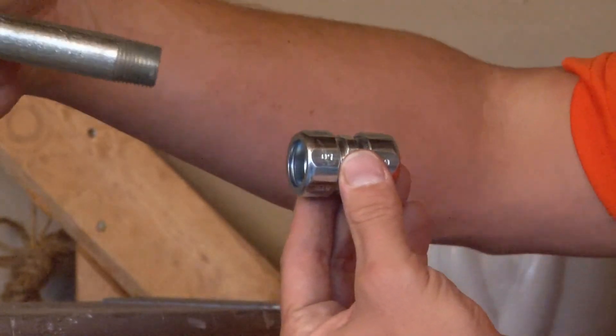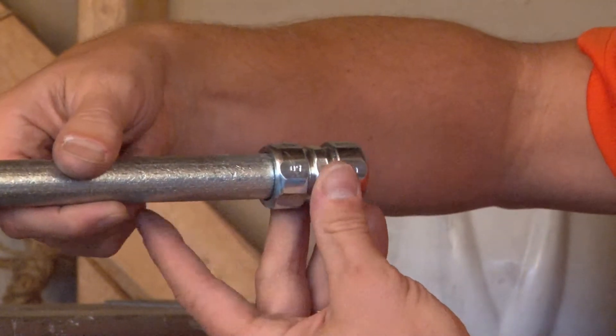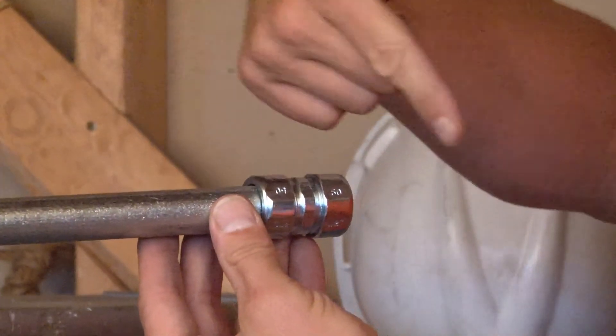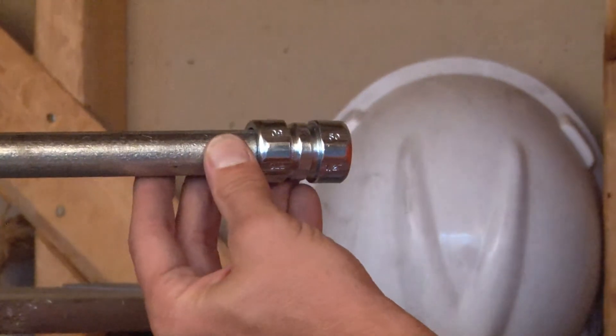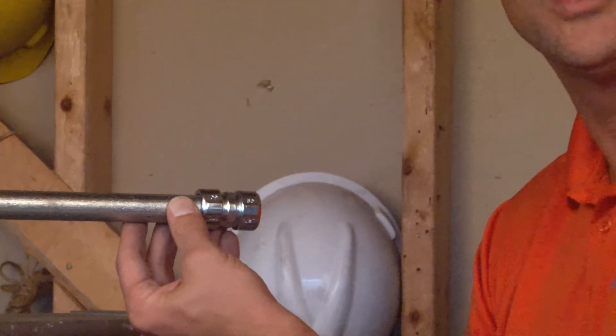Taking a piece of conduit and repeating the process on the other side now completes your raceway and you're ready for wire pull through the transition point from conduit to conduit.